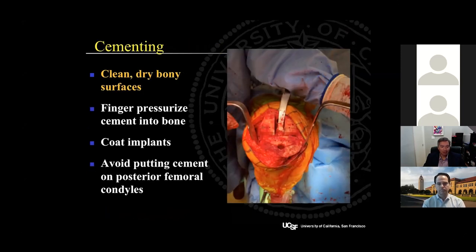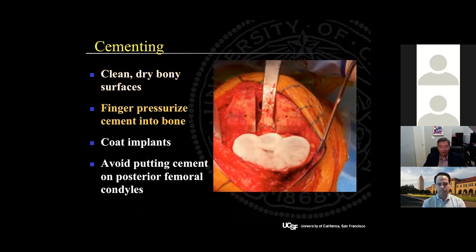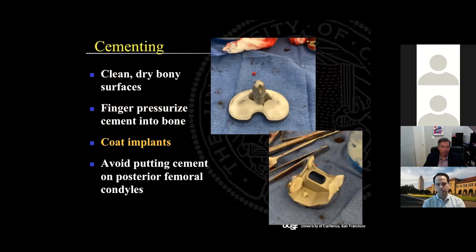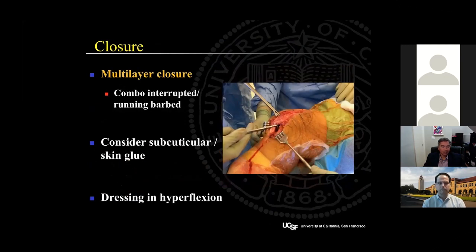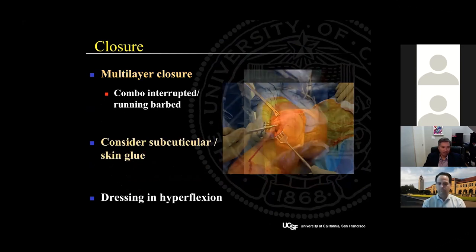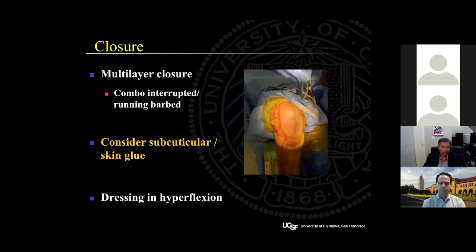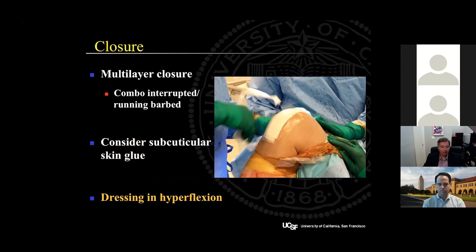A few words on cementing. You want clean, dry bony surfaces, and if you hadn't inflated the tourniquet yet, this is the time to do so. You want to finger pressurize the cement into the bone and blot away all fat and blood. Then coat your implants as this will improve the cement-implant bond. Make sure to place a little cement on the posterior condyles of the femoral component, as this will obviate the need to put any on the bony posterior femoral condyles, which could potentially result in excess cement extruding in the back of the knee. Closures should be meticulous and multi-layered. I tend to use a combination of interrupted and running barbed suture for the arthrotomy, and I've moved to a subcuticular closure which has been a game changer. Remember to place the dressing on in hyperflexion with very little tension on the steristrips or tegaderms to avoid blistering.